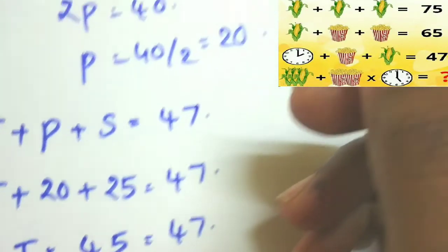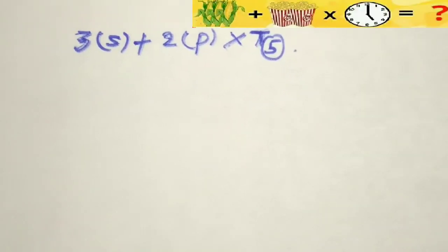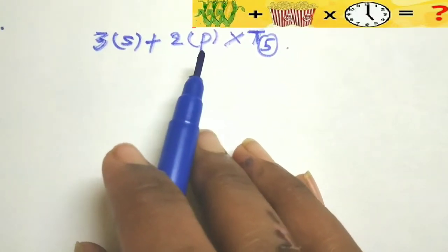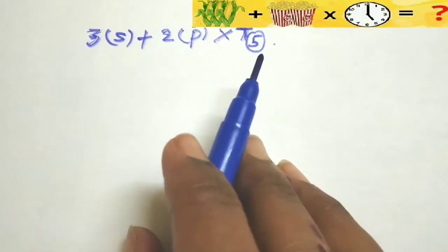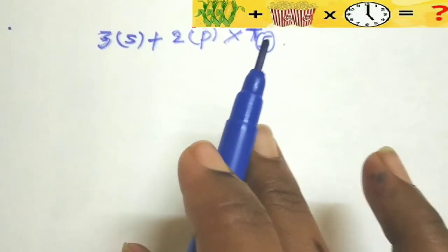Come to our puzzle, what we have to find. In the given figure, 3 sweet corns are there, so 3 sweet corns plus 2 popcorns are there. See the figure carefully, so 2 popcorns into time. It is showing 5, the time is the main important thing here.